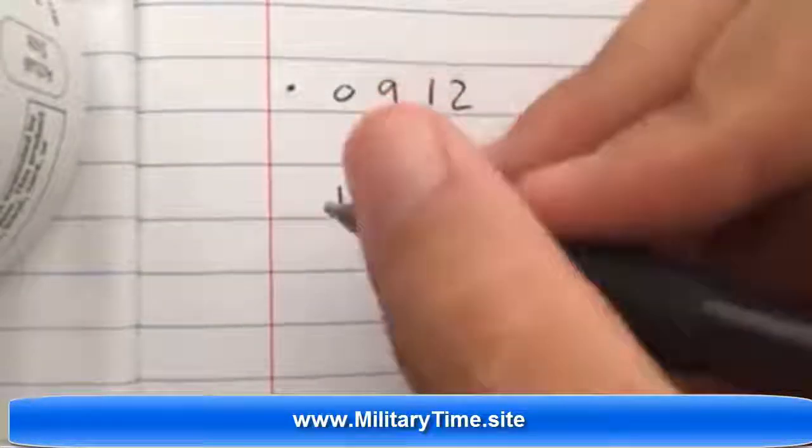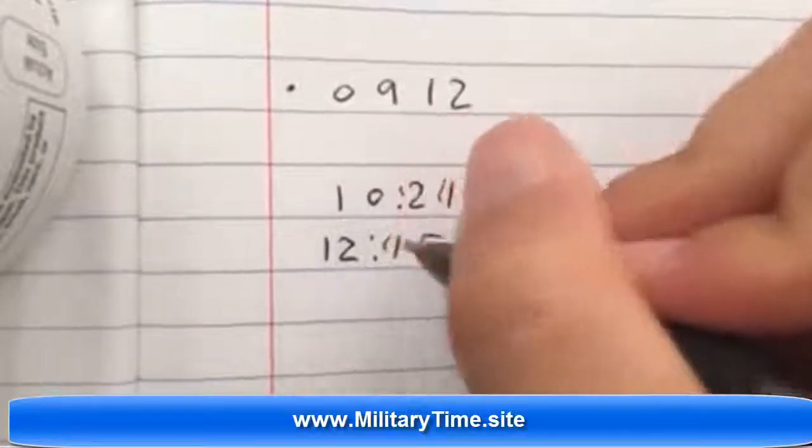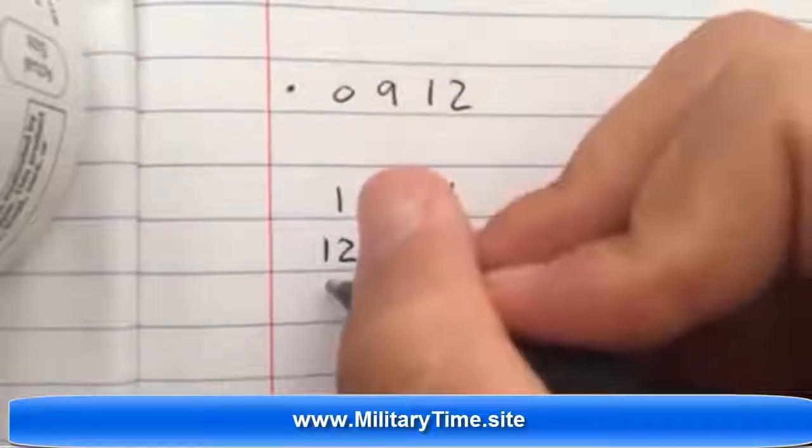So the only time it changes and people start getting confused is when it gets past 12. So 1245 in military time is 1245 on our clock too. When you get to 13...